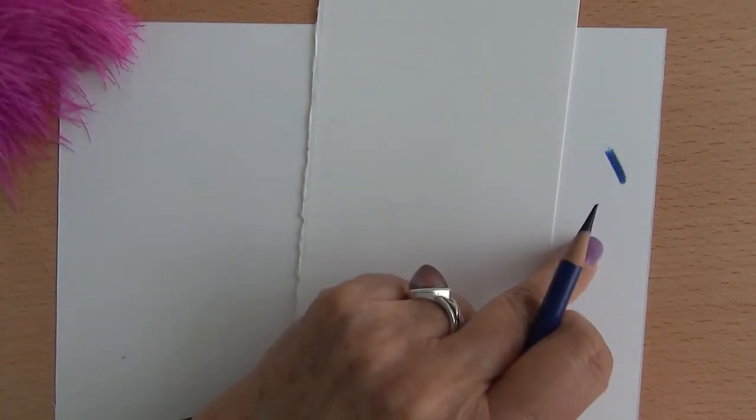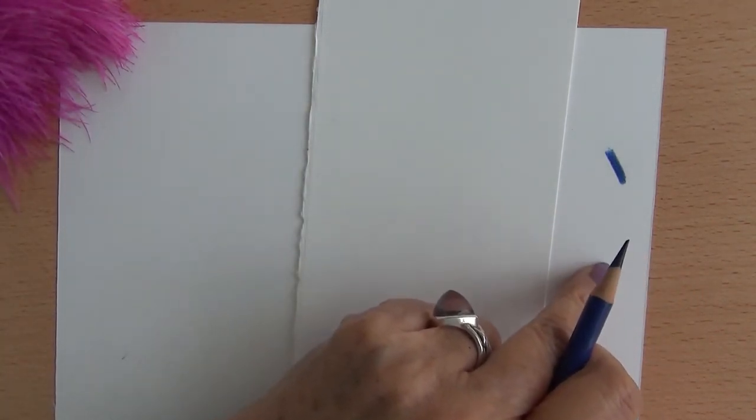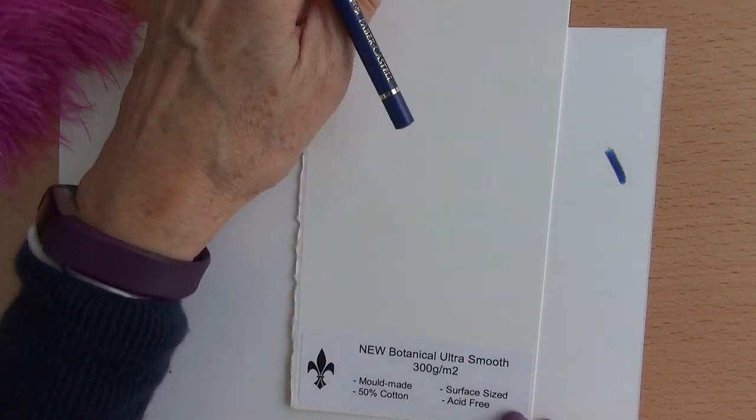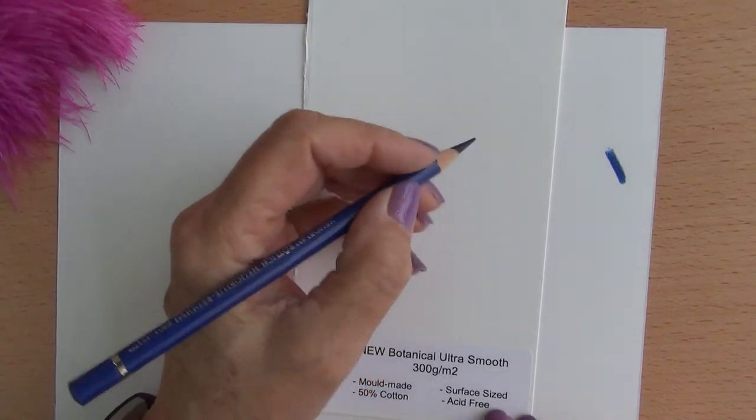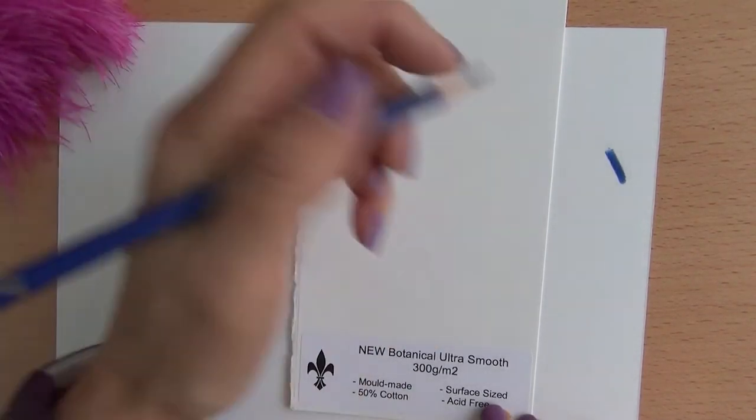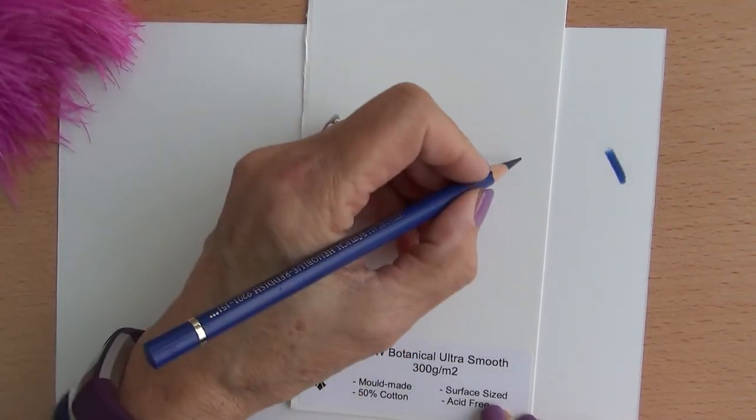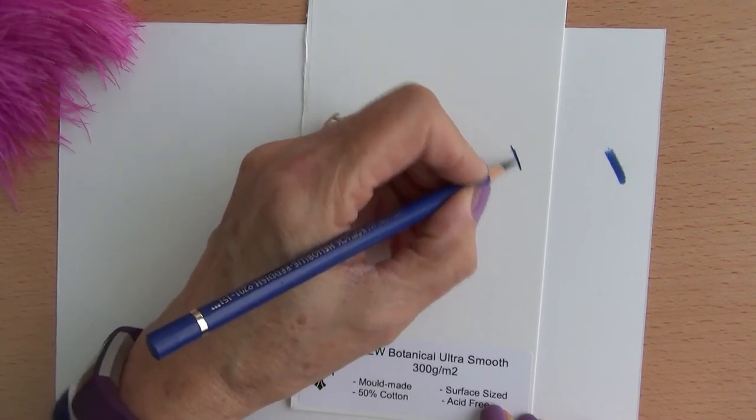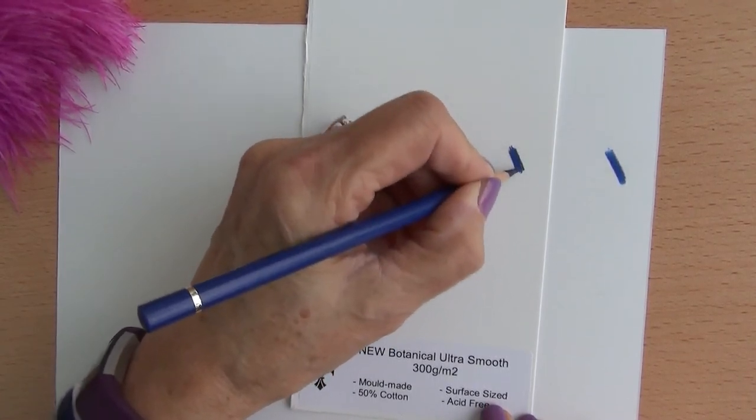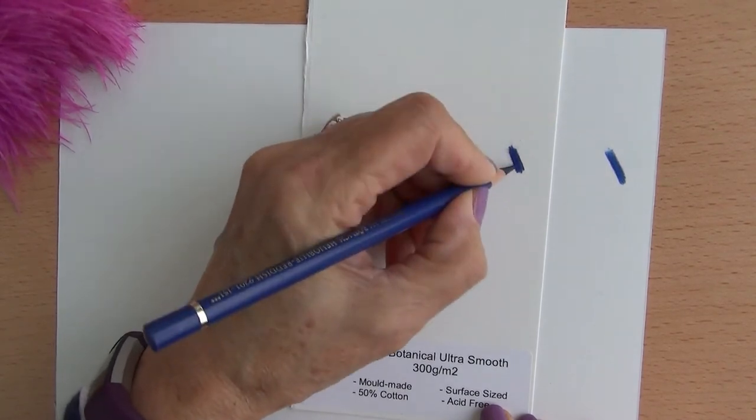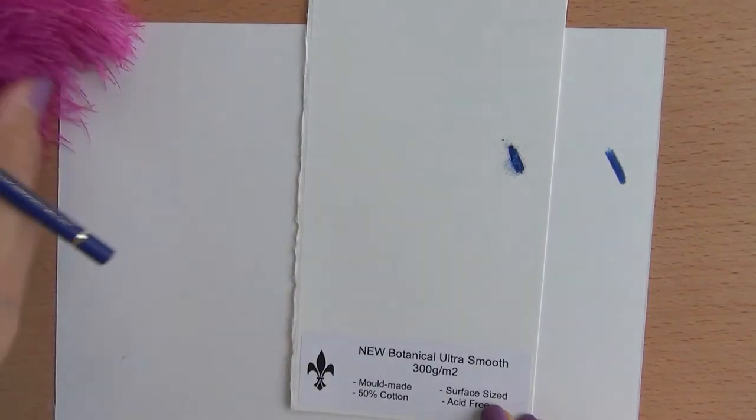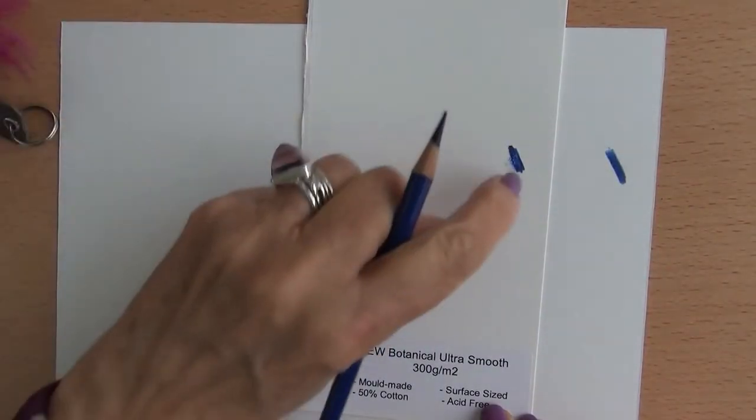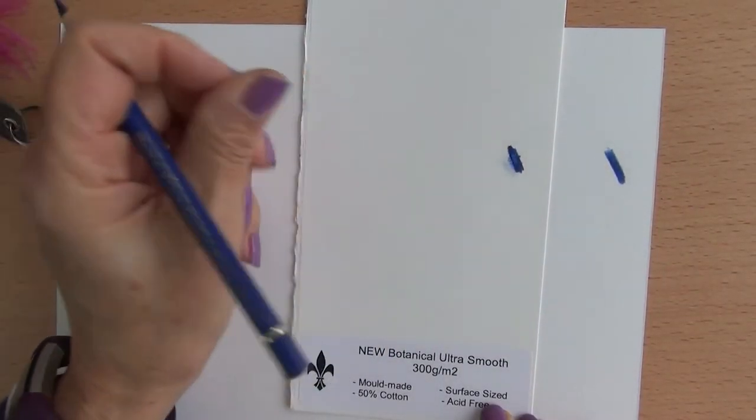But unfortunately the quality of Fabriano has now deteriorated and is inconsistent so we have to try out different papers and this one, the Botanical Ultra Smooth looks good, color matches, it's fine but when you do the pressure test to this again the paper is now tearing and can you see it's given way and that's no good at all.